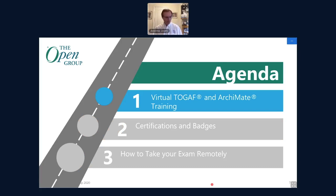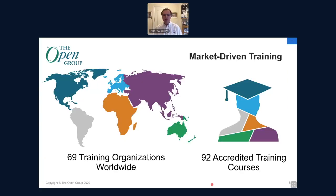The Open Group has 69 training organizations worldwide delivering TOGAF and ArchiMate training, with a total of 92 accredited courses — 69 TOGAF and 23 ArchiMate. Each course is assessed by the Open Group before accreditation is awarded, ensuring they meet quality standards. All accredited courses are against the latest versions: TOGAF 9.2 and ArchiMate 3.1, the latter recently updated from 3.0.1 in November.